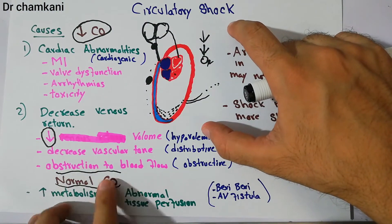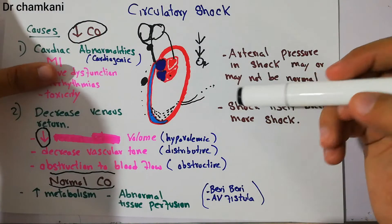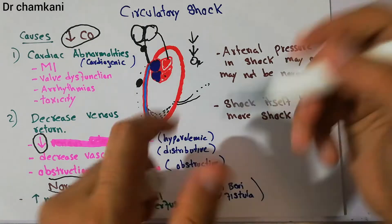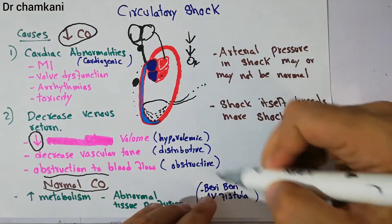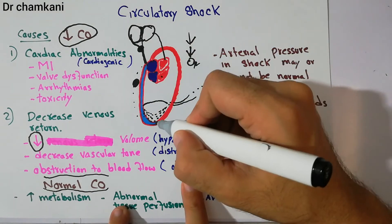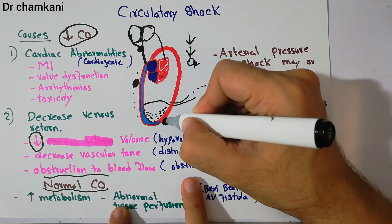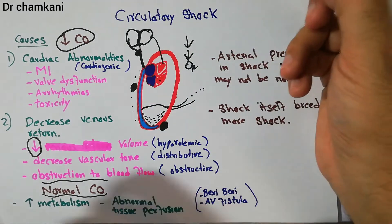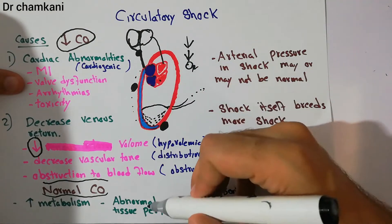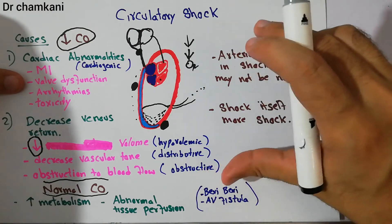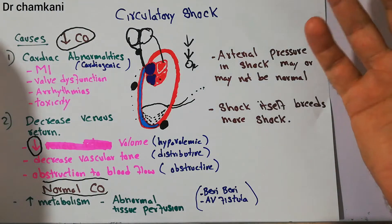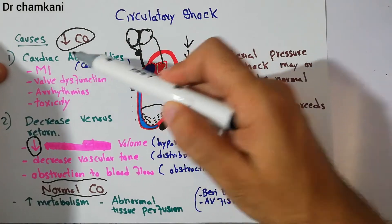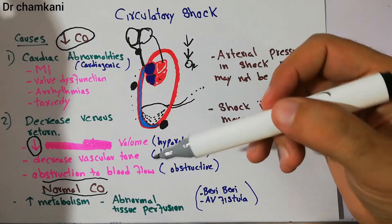Another reason for shock with normal cardiac output is abnormal tissue perfusion. Conditions like beriberi or AV fistula are examples where cardiac output is normal but shock occurs. In AV fistula, there is a direct connection between an artery and vein, so most blood is diverted through the fistula directly into the vein without properly perfusing the tissue. In beriberi, abnormal perfusion occurs due to decreased thiamine levels. In these conditions, the heart pumps a normal amount of blood and venous return is normal, but either the demand is very high or there is abnormal perfusion.